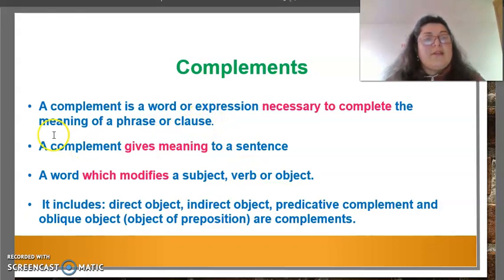A complement is a word or expression necessary to complete the meaning of a phrase or clause. A complement gives meaning to a sentence. A complement is a word which modifies a subject, verb or object. The complements include direct object, indirect object, predicative complement and oblique object. It could be object of preposition.